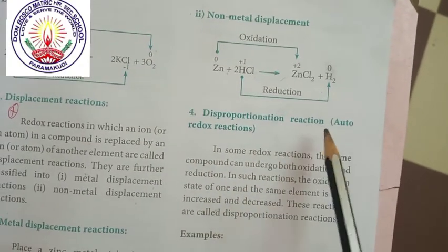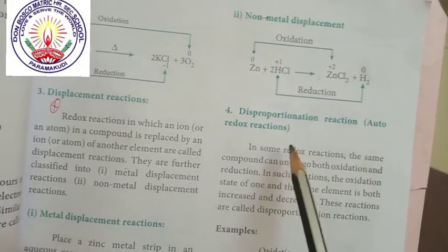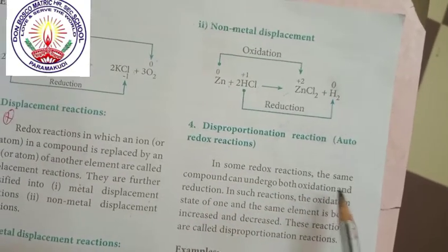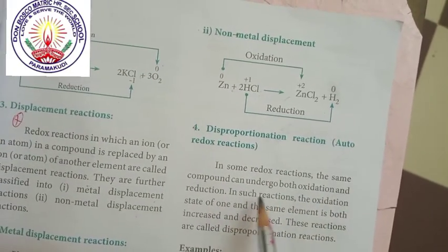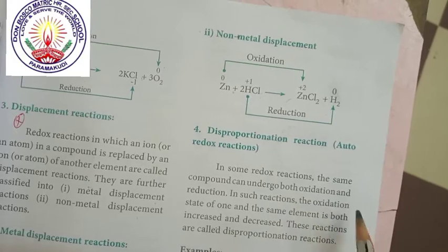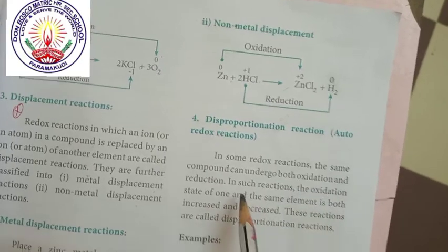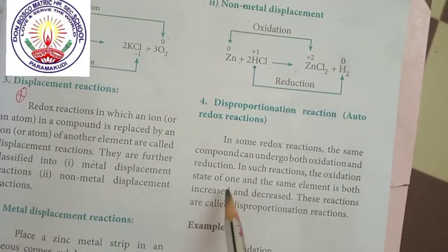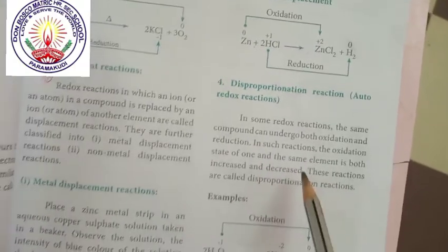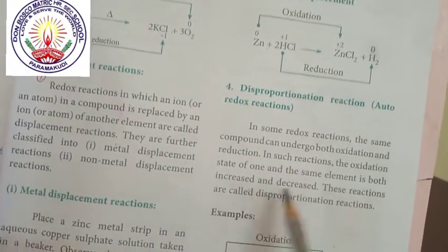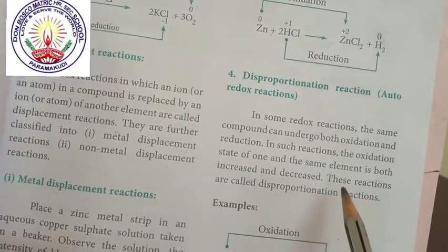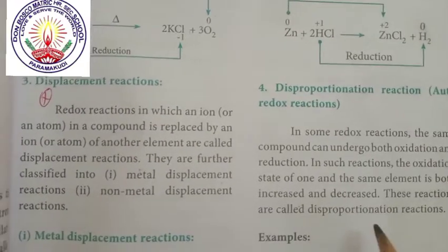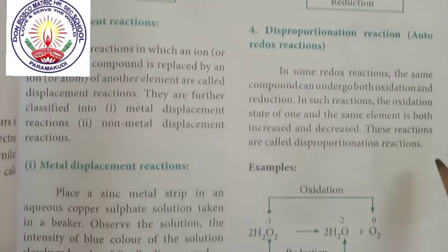Next is disproportionation reaction, also called auto-redox reaction. In some redox reactions, the same compound can undergo both oxidation and reduction. In such reactions, the oxidation state of one and the same element both increases and decreases. These reactions are called disproportionation reactions.